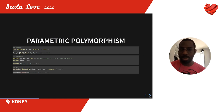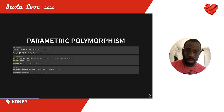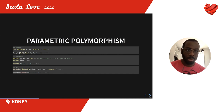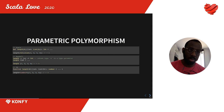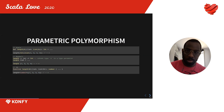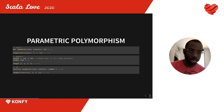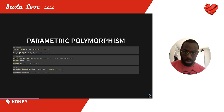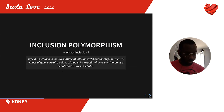In Haskell, the length function similarly goes from a list of 'a' to an integer. Since 'a' is unknown to the compiler, it's treated as a type parameter. The implementation is the same — the only syntactic difference from Scala is that instead of brackets we use angle signs. Now let's talk about inclusion polymorphism.